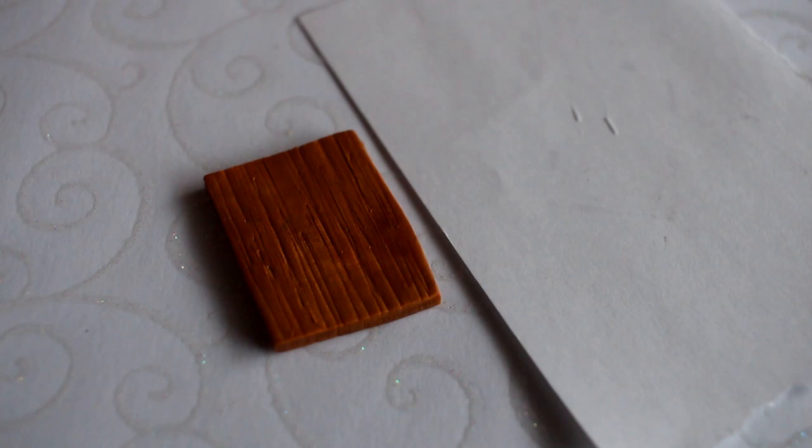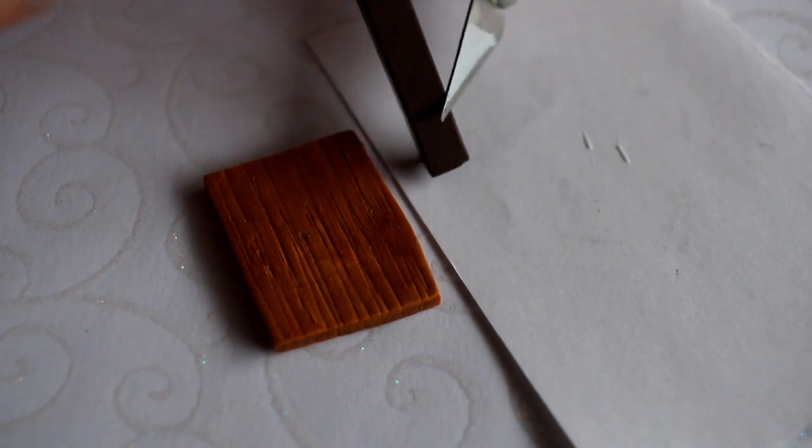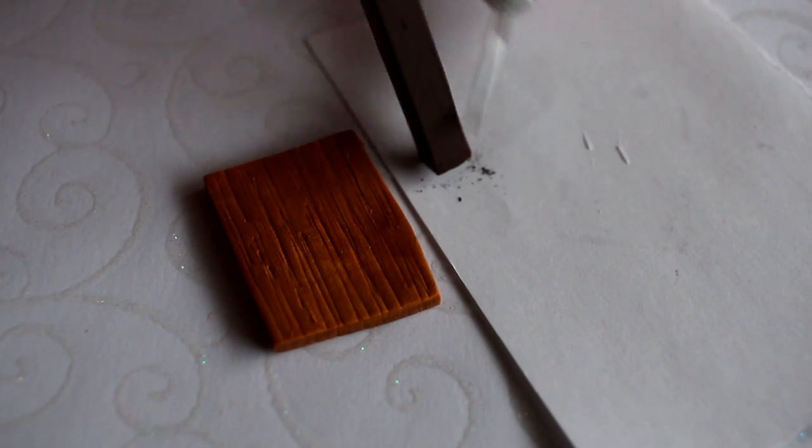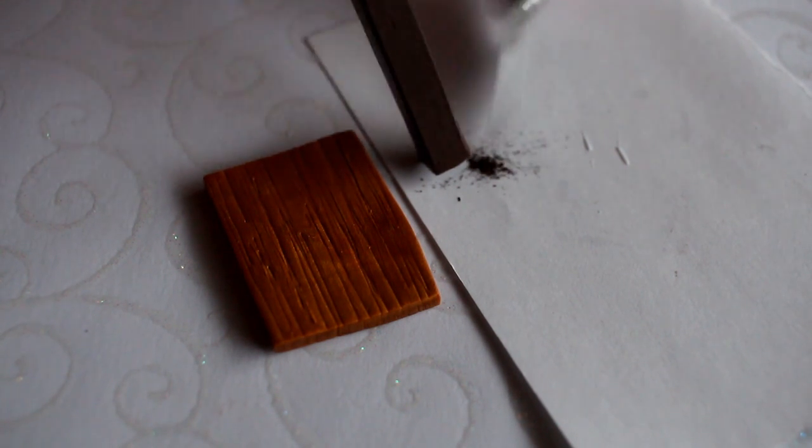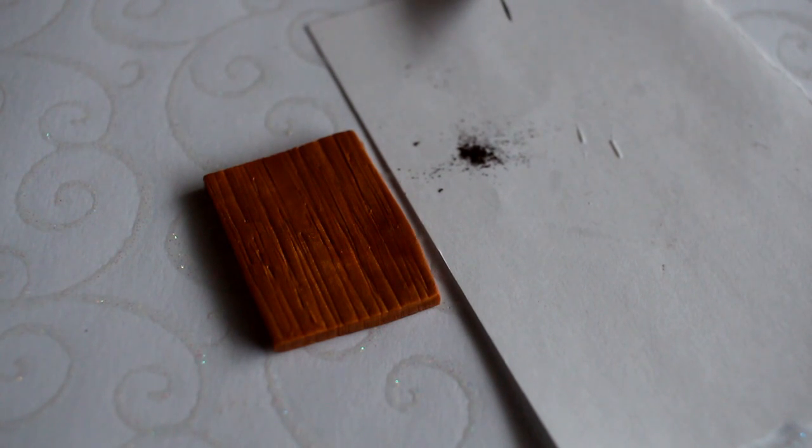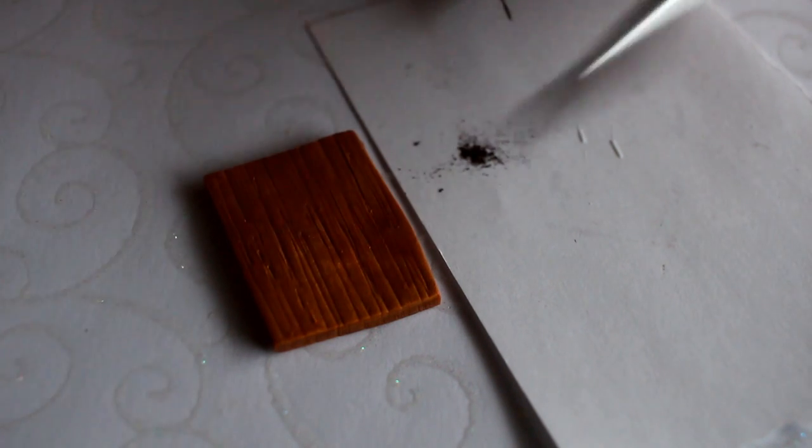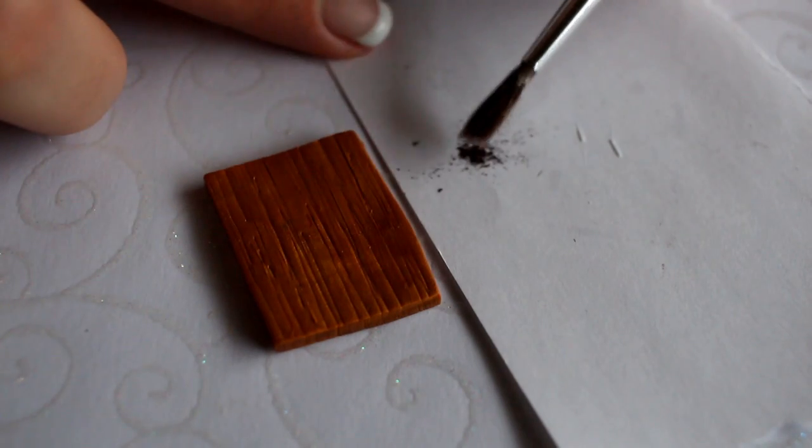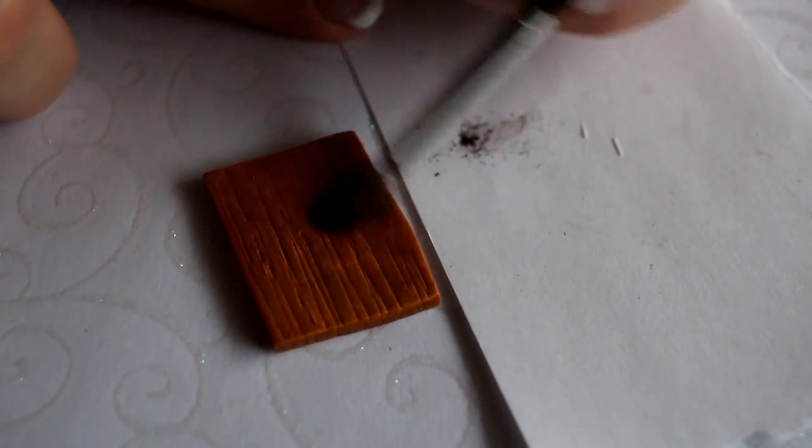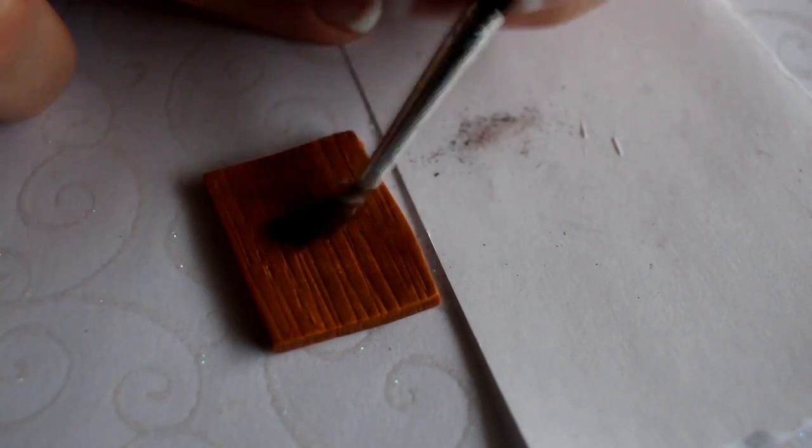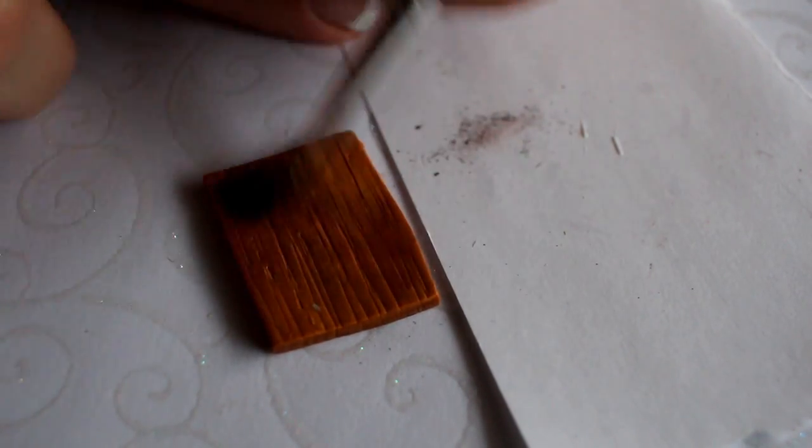Now we're going to add some more color. I'm using dark brown chalk here. I'm just crumbling and cutting it a bit, and then using a brush, I'm brushing the chalk powder all over the cutting board.